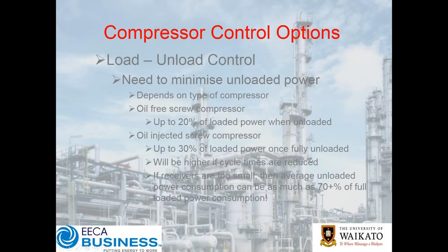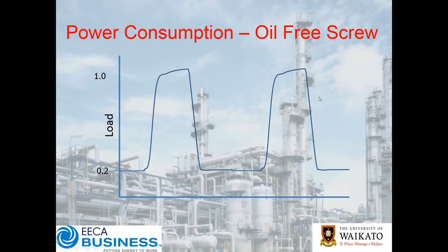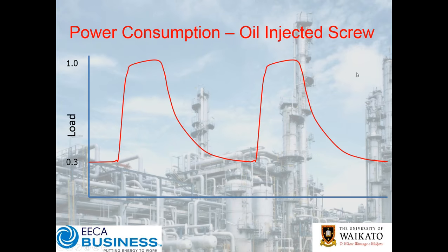However, what we're going to look at is our power consumption curve. On an oil-free compressor, this is an actual as-measured kilowatts plot. You can see your load cycle here — the load actually increasing as the pressure in the system is increasing and then the unload. For an oil-free screw compressor, the unloaded power consumption is about 20% of the full loaded power.